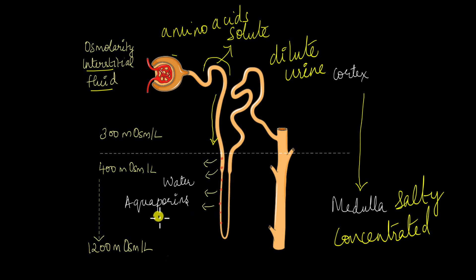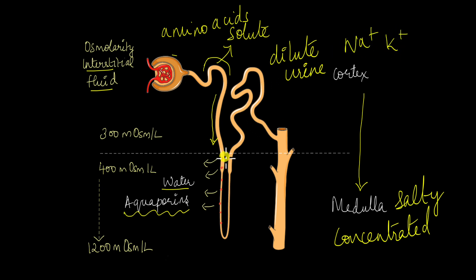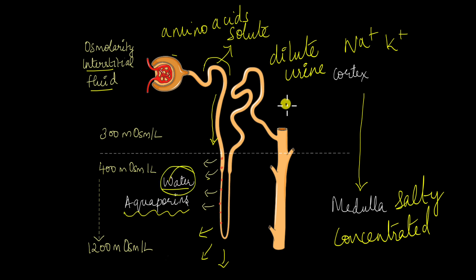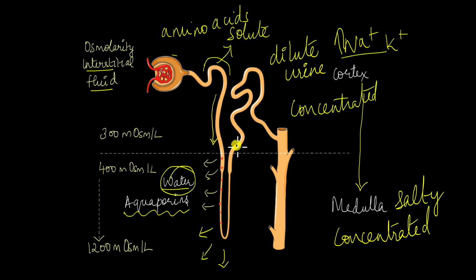At the descending limb, there are channels known as aquaporins. The descending limb is only permeable to water and not permeable to sodium, potassium, or any other electrolytes. Because there is a dilute urine reaching the descending limb, and due to the aquaporins, a lot of water gets reabsorbed into the interstitial space. Because we are removing only water and no electrolytes, the filtrate becomes even more concentrated.